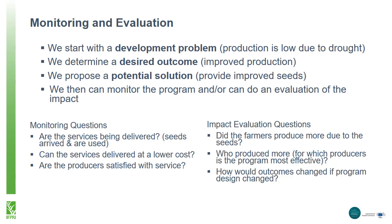There are some similar starting points for monitoring and evaluation. We start with a development problem — for example, production is low due to drought. We determine a desired outcome, such as improved food security. We propose a potential solution, such as providing improved seeds. We can then monitor the program, asking if the services are being delivered, how effectively, and the satisfaction with the service. If we were going to do an impact evaluation, we would ask whether the farmers produce more as a result of the improved seeds, who produced more, and how outcomes changed or would change if we changed the design.